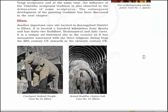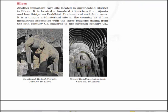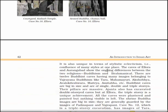Now something about Elora. Another important cave site located in the Aurangabad district is Elora. It is located a hundred kilometers from Ajanta and has 32 Buddhist, Brahminical and Jain caves. It is a unique art historical site as it has monasteries associated with three religions dating from the 5th century CE onwards to the 11th century CE. Here you will see the courtyard of the Kailash temple, the monumental figure of Elephant in cave number 16 of Elora, and the seated Buddha in Chaitya hall cave number 10 of Elora.